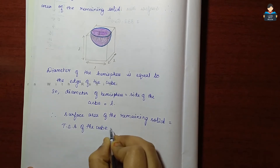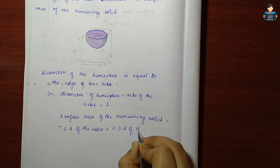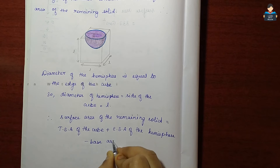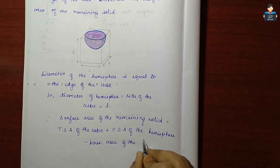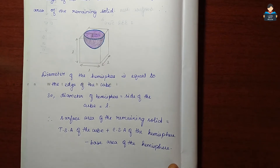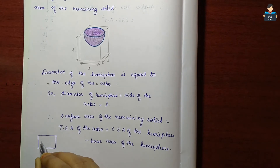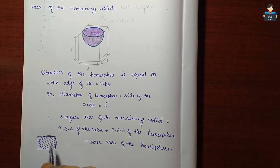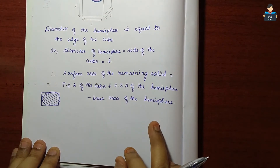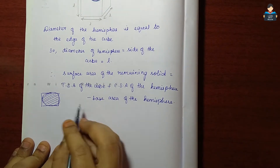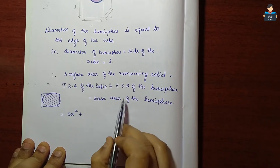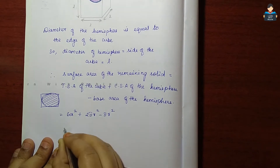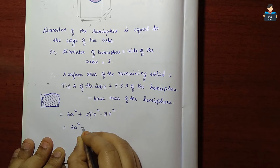So: total surface area of the cube plus curved surface area of the hemisphere minus base area of the hemisphere. That gives us 6a² plus 2πr² minus πr², which simplifies to 6a² plus πr².